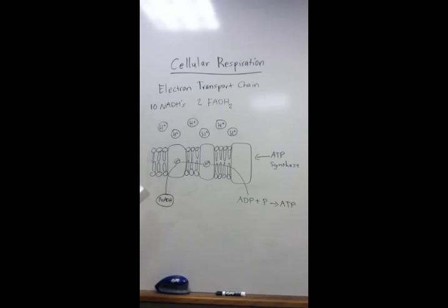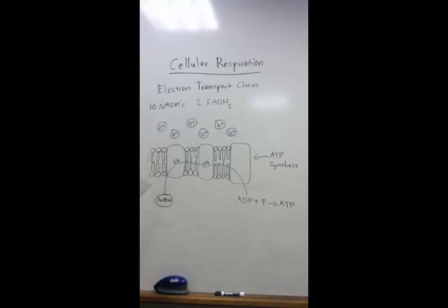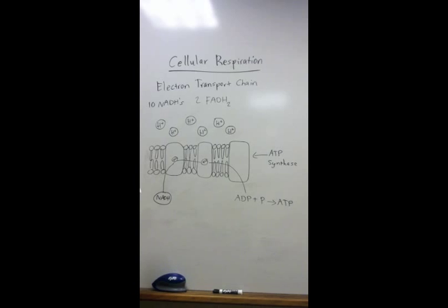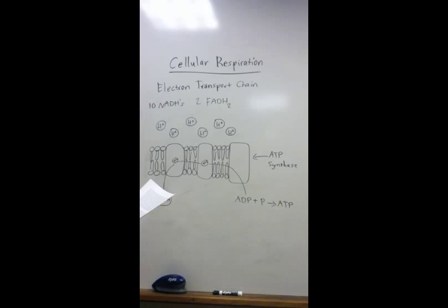The third step of cellular respiration is called the electron transport chain or oxidative phosphorylation. This is the most important step with regards to how DNP affects the body. The electron transport chain produces the most ATP out of all three steps of cellular respiration.